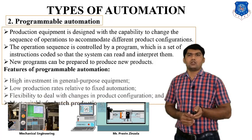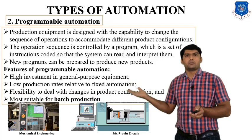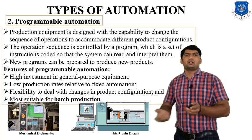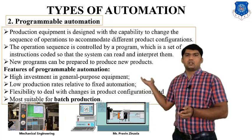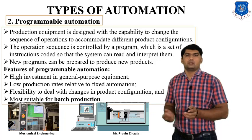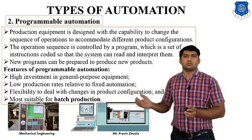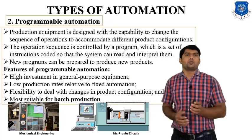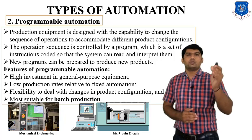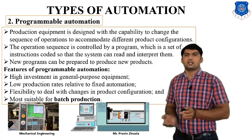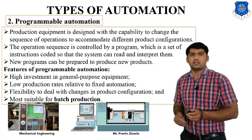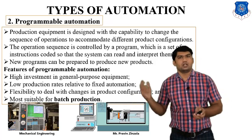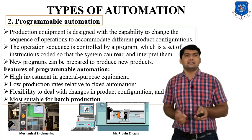Features of programmable automation include a high initial investment, as it requires special computers, programming software, and skilled personnel for programming. It also has a lower production rate relative to fixed automation, because each component requires special programming. If we change the component, we need new programming for it. However, it is flexible in dealing with changes in product configuration, making it advantageous compared to fixed automation and mostly suitable for batch production.